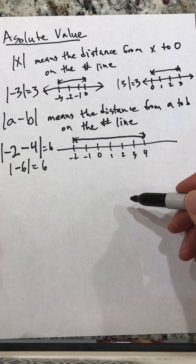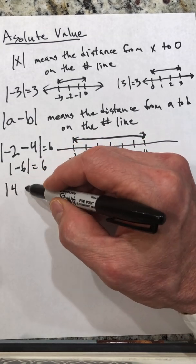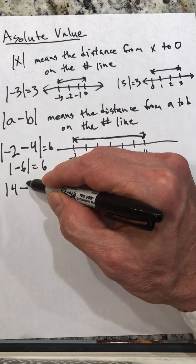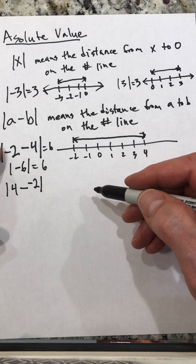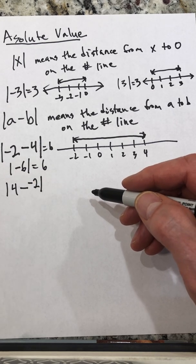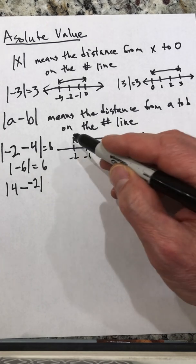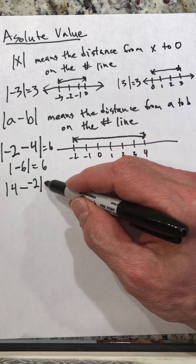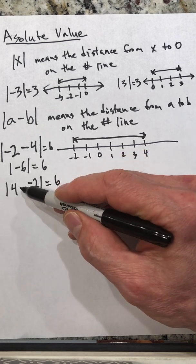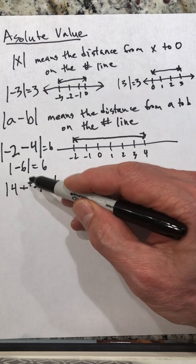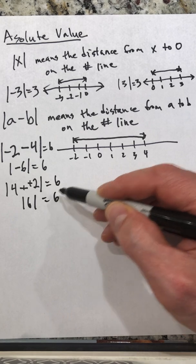What if we start at four and go to negative two? That would be the absolute value of four minus negative two. We're still measuring the distance between negative two and four, just going in the other direction. It doesn't matter which direction — the distance is still six. Four subtract negative two is like four plus two, so the absolute value of six is also six.